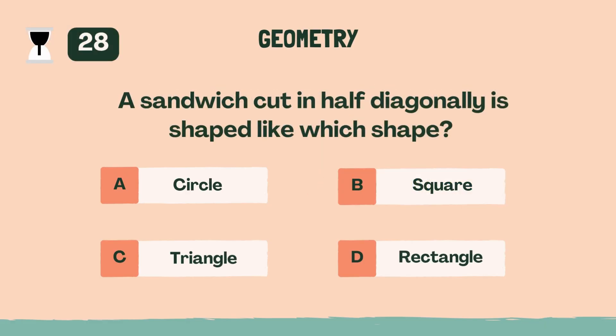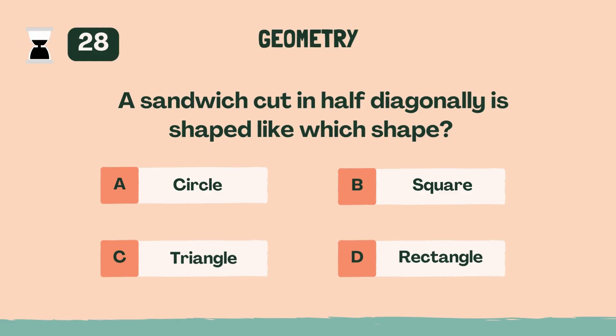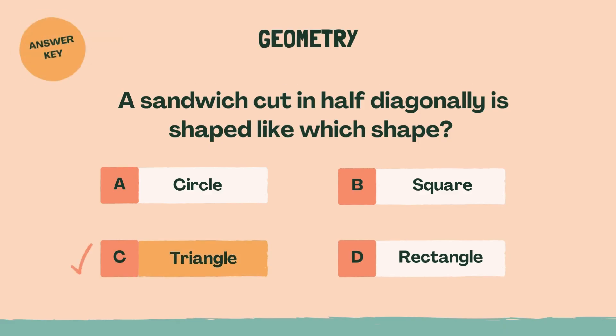A sandwich cut in half diagonally is shaped like which shape? C, Triangle.